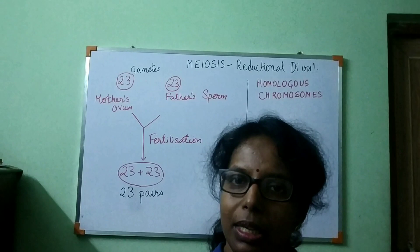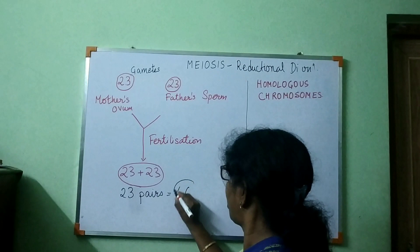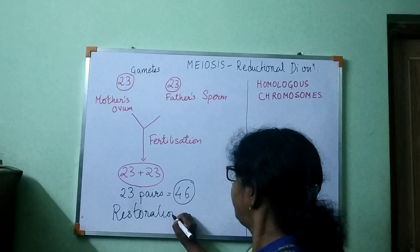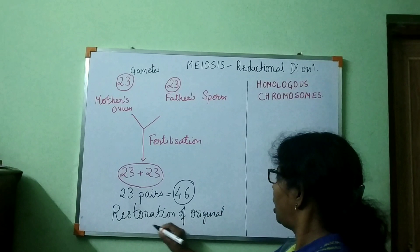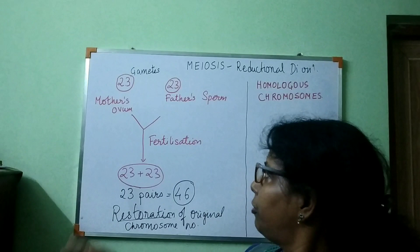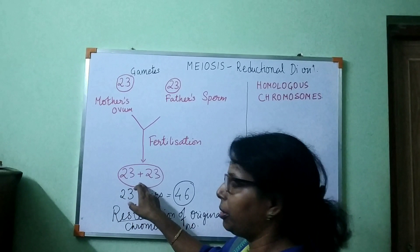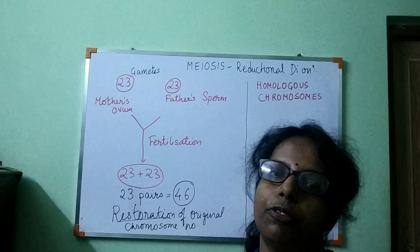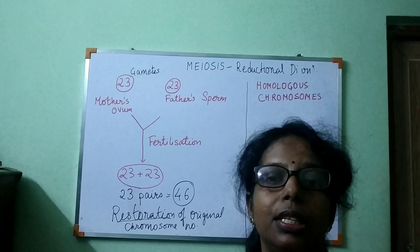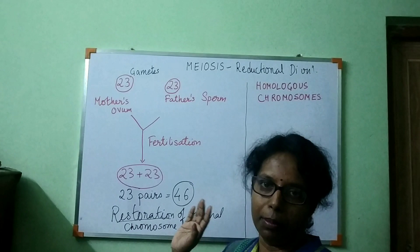This is why meiosis takes place — so that half the mother's chromosomes and half the father's chromosomes come together and restore the original 23 pairs, meaning 46 chromosomes. Restoration of the original chromosome number is necessary. If there were no halving, 46 and 46 would fuse together, and the zygote would contain more than 46 chromosomes, which is not possible for a human being, whose identity is defined by 46 chromosomes or 23 pairs.